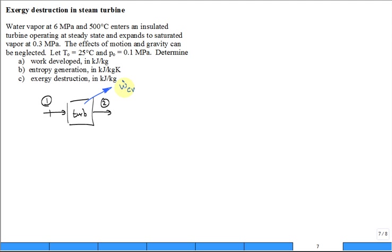There's our control volume surrounding the turbine. The steam, H2O, comes in at a pressure of 6 MPa and a temperature of 500 degrees C. It's a well-insulated turbine, so Q dot equals zero.